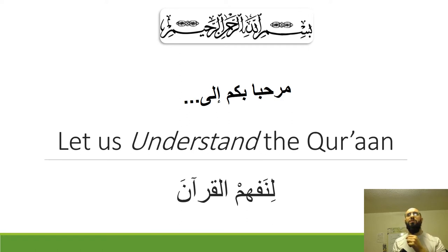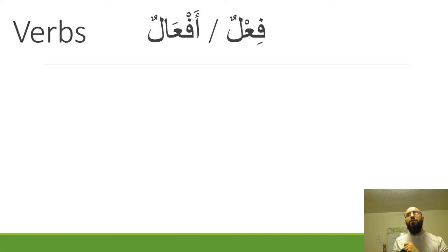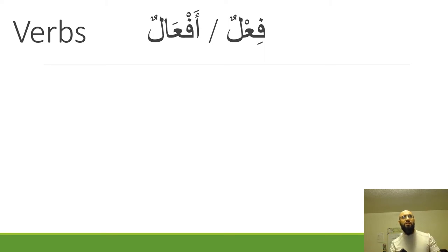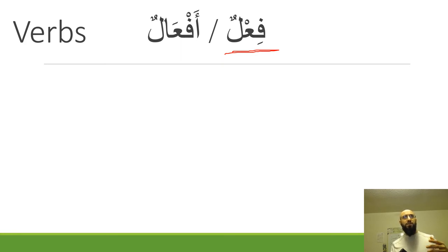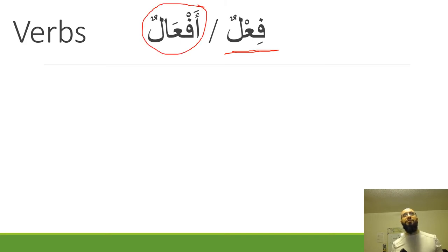We'll start with verbs, since verbs are usually considered to be the root of all other words in the Arabic language. The word for verb is fi'l — fi'lun means verb or action, and it's used quite often. Fi'lun is the singular and afa'lun is the plural.